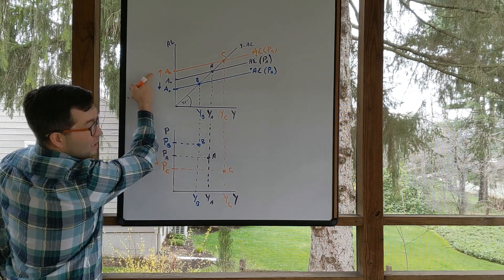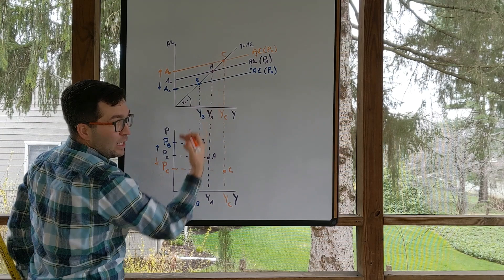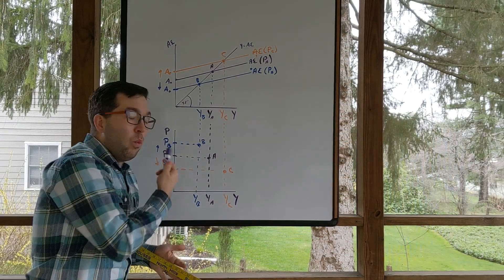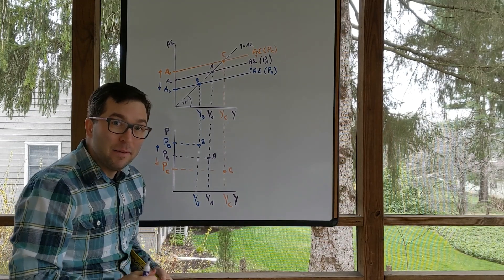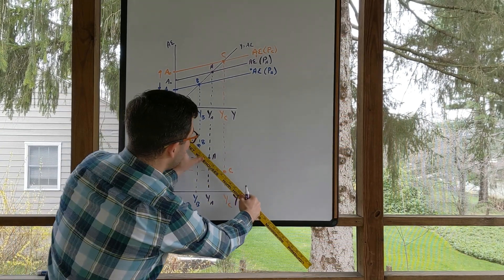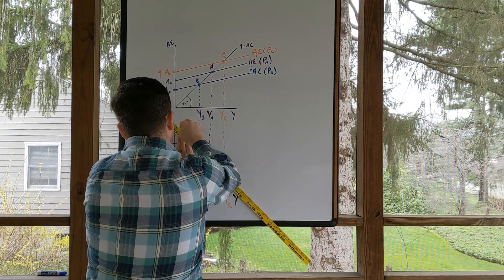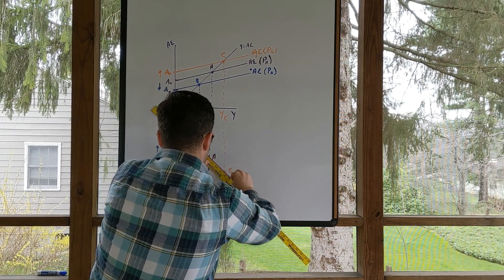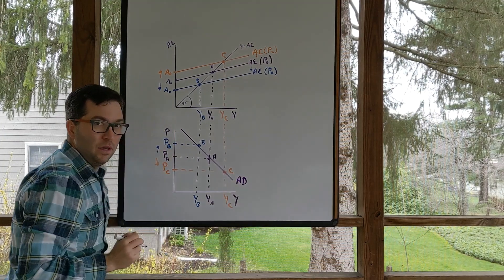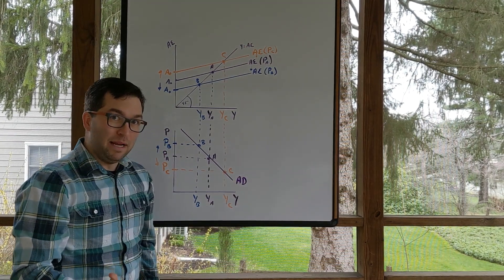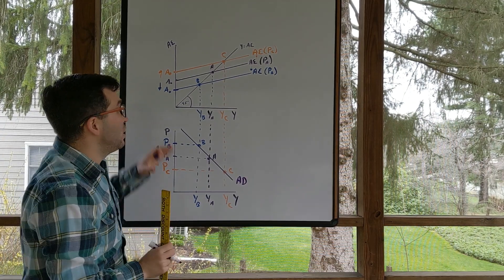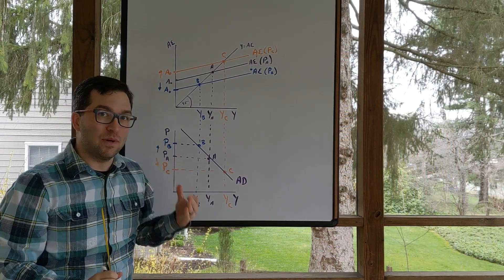So we have a new combination: a lower price level associated with a higher level of real GDP. A change in the price level changes autonomous spending, so aggregate expenditure changes, creating a new level of overall GDP. Because aggregate demand is that relationship between the price level and real GDP, as we connect these points we get a downward-sloping aggregate demand curve. That's how we derive and graph the aggregate demand curve from the aggregate expenditure model.